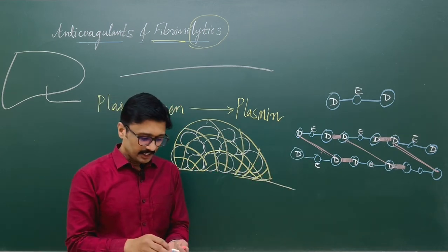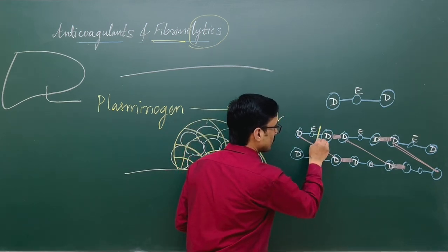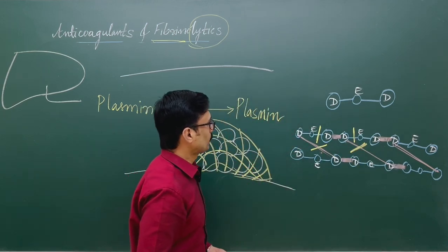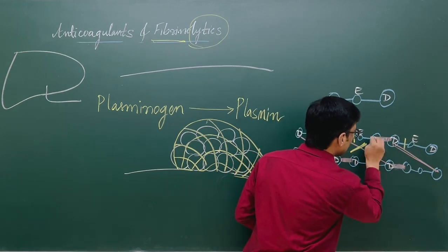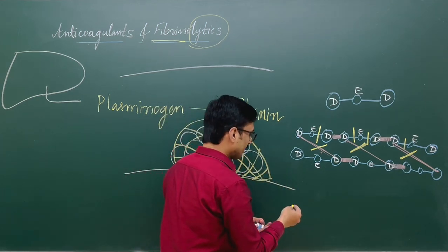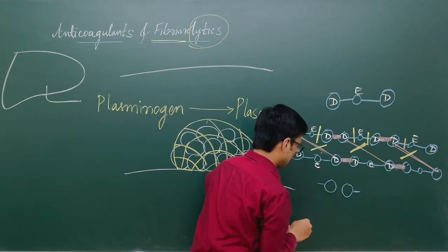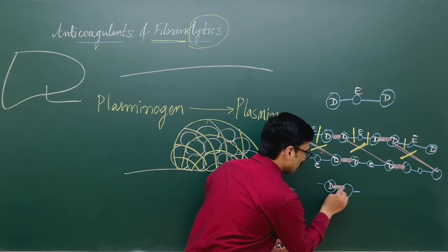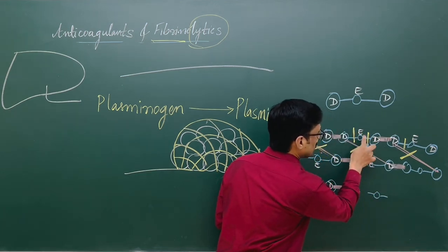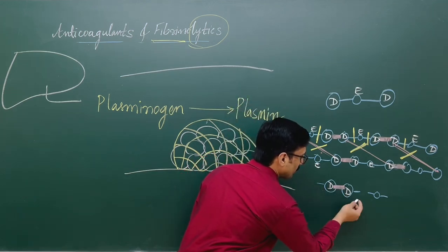Now, what is the role of plasmin? Plasmin is a cutter that will break down the bonds. So this bond is broken down, this bond is broken down — the fibrin degradation products are formed. Here this portion is released, this portion is released, this portion is released.